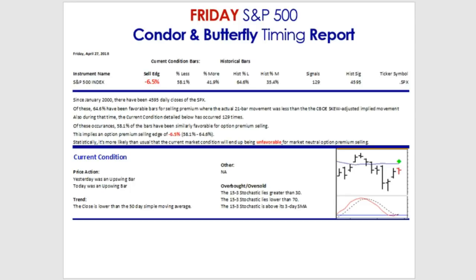Now let's go to our current market condition. Our market condition has occurred 129 times, and of those 129, only 58.1% were favorable for selling options premium. That's less than the benchmark by roughly 6.5%. So statistically, it's more likely than normal that the current market condition will end up being unfavorable for market neutral option premium selling.